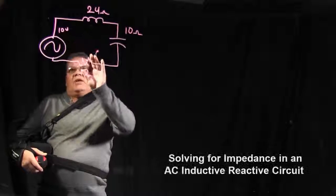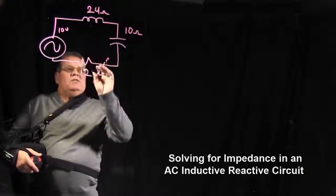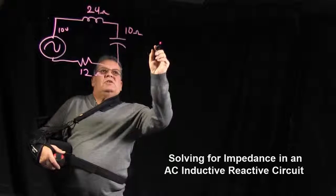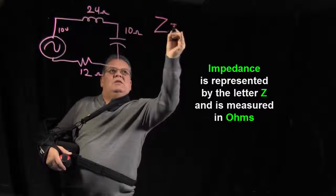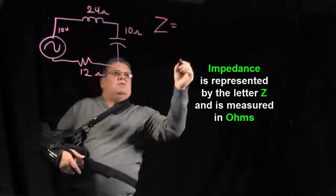Okay, today we want to solve for impedance in an AC inductive reactive circuit. So our symbol for impedance is Z, and our unit of measure for that would be in ohms.